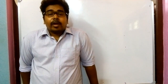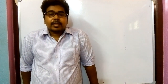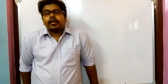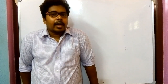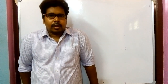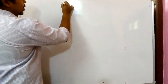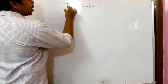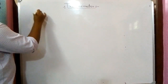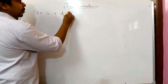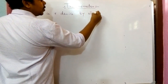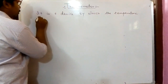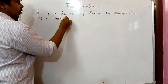Hi dear students, today we have come with a new video of class 6. In the previous class we discussed about time and temperature — in the portion of temperature we learned about the units and the relation between them. Today we have to discuss about the device by which we can measure the temperature. That device is a thermometer, which is used to measure the temperature of a body.